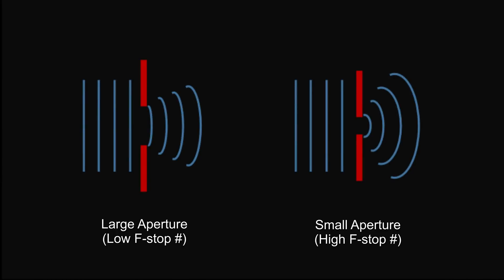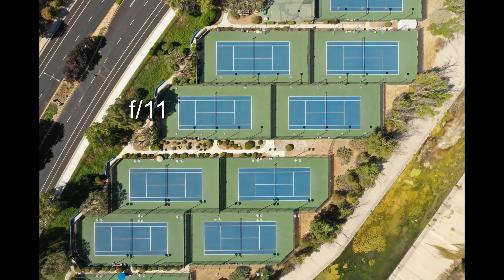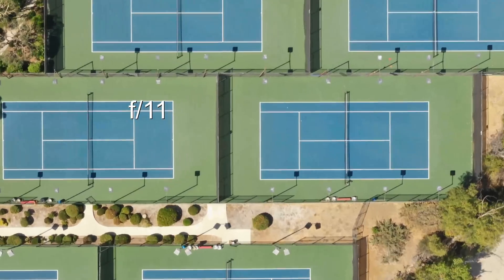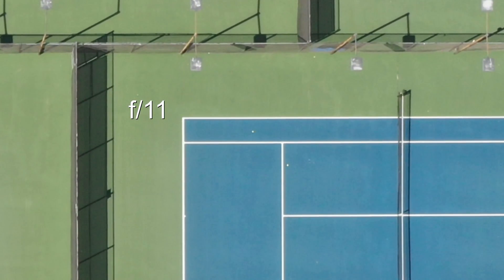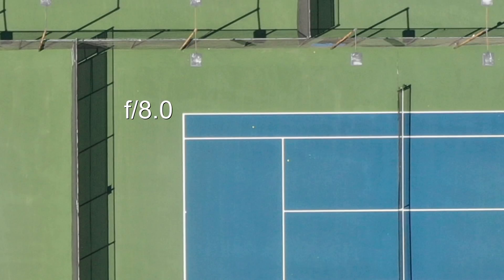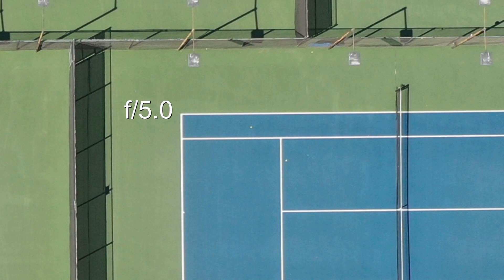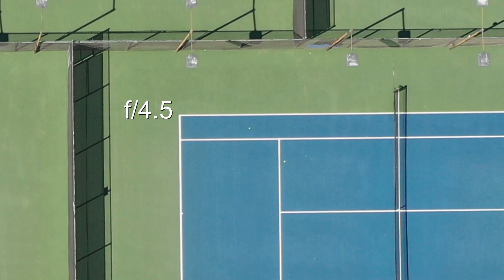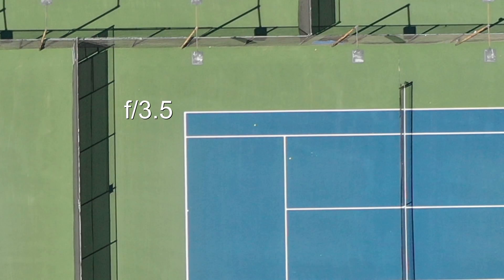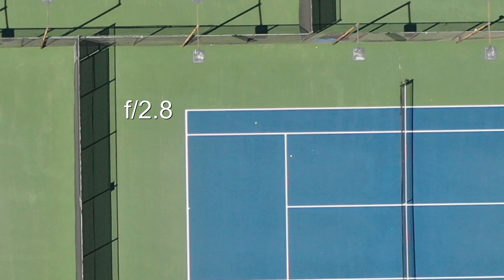Higher aperture settings can result in diffraction due to light waves passing through a small aperture opening and interfering with itself, causing a soft image. Here I've taken a photo at F11, which is the smallest aperture opening, and I'll zoom in so we can better see any image softness. Then I'll open up the aperture at a few f-stops to see if there's any difference in softness due to diffraction: F8.0, F5.6, F5.0, F4.5, F3.5, and F2.8.